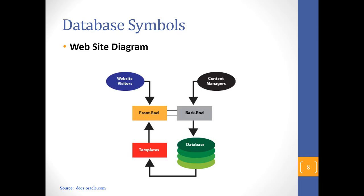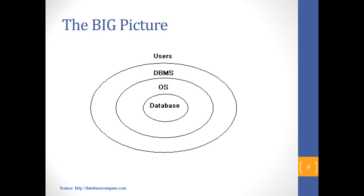Here is an example of a website diagram. The cylindrical shape represents the database. The front end is what the user sees on the screen — the browser — and then the back end has access to the database. You interact with the site going back and forth between front end and back end. When you log in, the site connects to the back end, which connects to the database to retrieve your information and authenticate you.